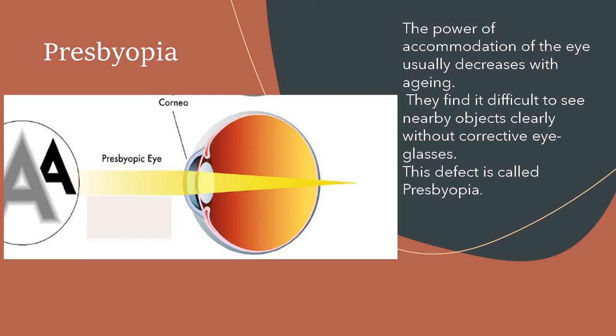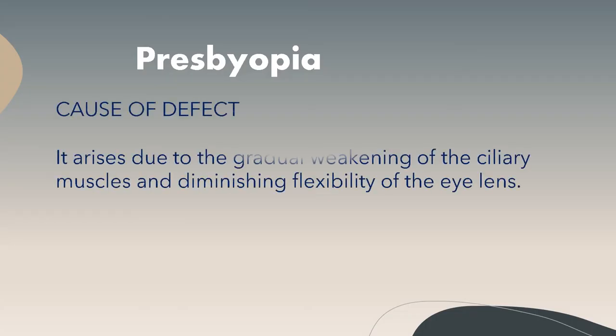Everyone eventually becomes presbyopic. The cause of this defect is the gradual weakening of the ciliary muscles and diminishing flexibility of the eye lens.